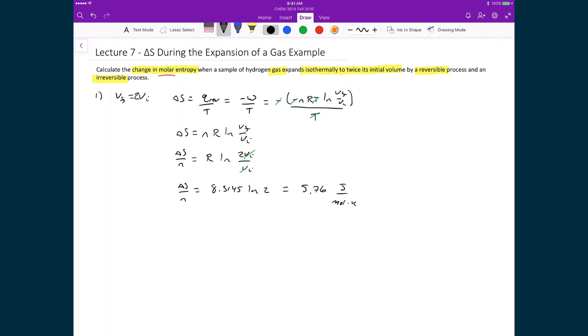How is this different for an irreversible expansion? Well, in this case, since we know that ΔS is a state function, what that means is that it's independent of the path that it takes to go from one state to the next. And since its state in this case is defined by the volume, then we know that the molar entropy change for the irreversible process is just going to be 5.76 joules per mole kelvin.